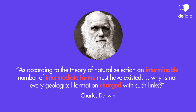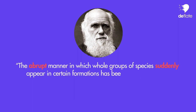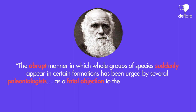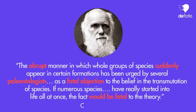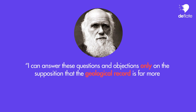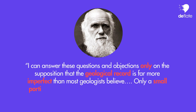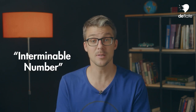Darwin wrote: "As according to the theory of natural selection, an interminable number of intermediate forms must have existed, why is not every geological formation charged with such links?" And also: "The abrupt manner in which whole groups of species suddenly appear in certain formations has been urged by several paleontologists as a fatal objection to the belief in the transmutation of species. If numerous species have really started into life all at once, the fact would be fatal to the theory." Darwin's response was: "I can answer these questions and objections only on the supposition that the geological record is far more imperfect than most geologists believe. Only a small portion of the world has been geologically explored." So Darwin asserted that paleontologists simply hadn't unearthed yet the interminable number of intermediate forms his theory predicted, hoping that the future of paleontology would change that and vindicate him.